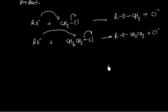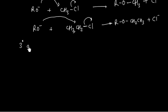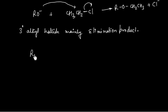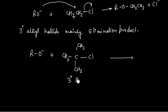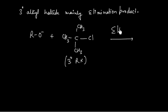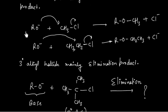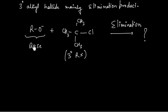In the case of a tertiary alkyl halide, we will have mainly elimination product. For example, if RO⁻ reacts with a tertiary alkyl halide such as (CH₃)₃CCl, we will have mainly elimination product — elimination will be favored. In this case RO⁻ acts as a base, whereas with primary and secondary halides it acts as a nucleophile.